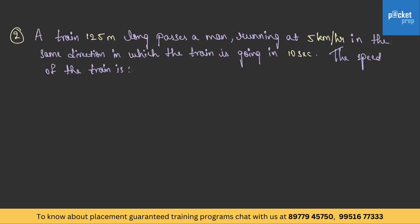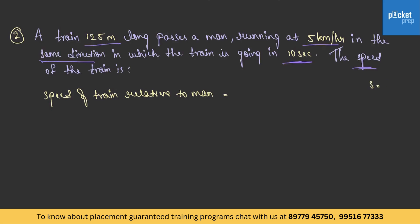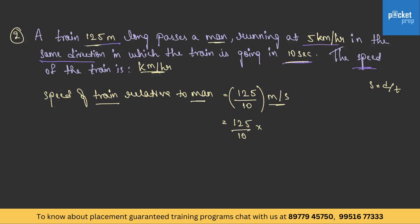Let us move to question 2: A train 125 meters long passes a man running at 5 km per hour in the same direction in which the train is going, in 10 seconds. They are asking for the speed of the train. First, let us find the speed of the train relative to the man: speed = distance / time = 125 / 10 = 12.5 m/s. Converting to km/h: 12.5 × 18/5 = 45 km per hour.